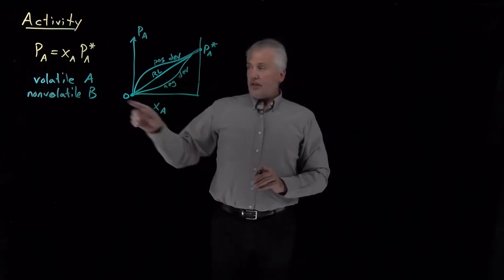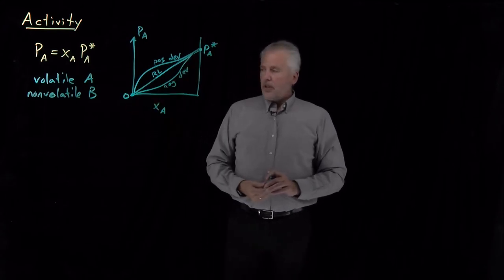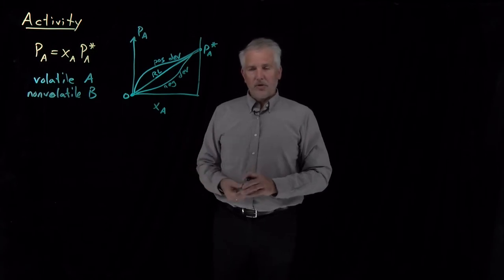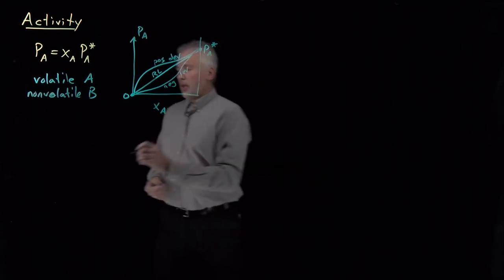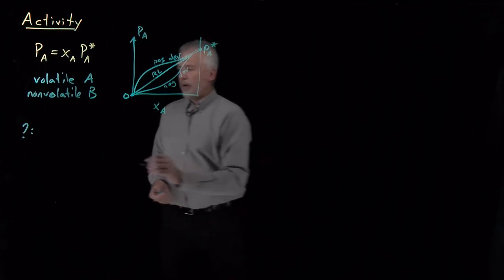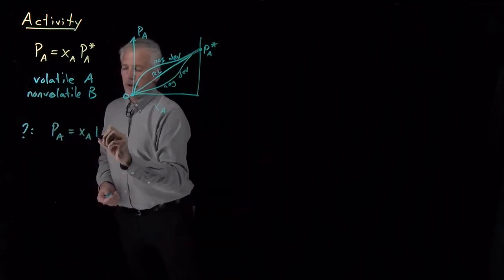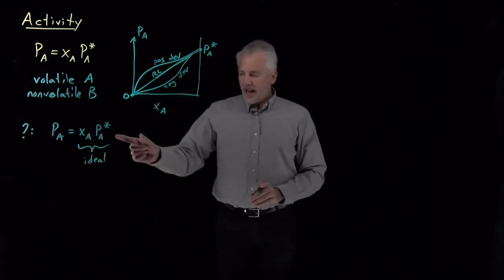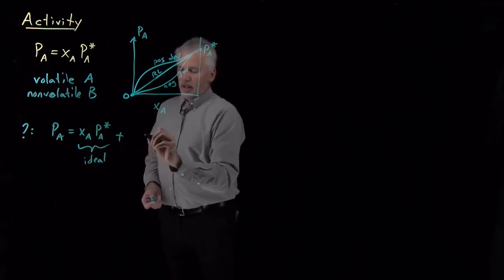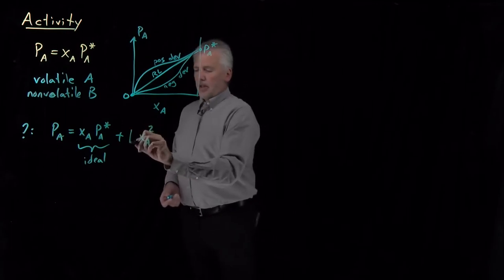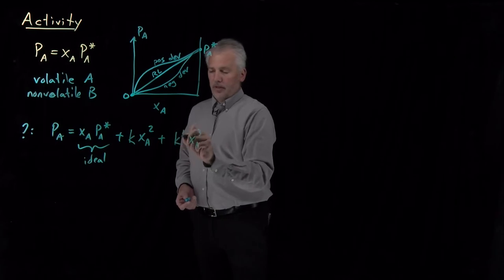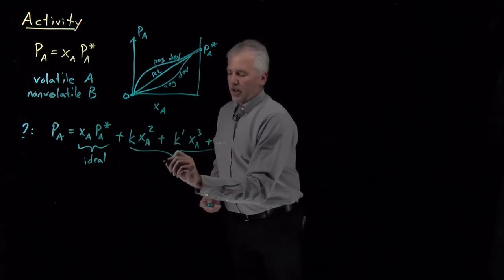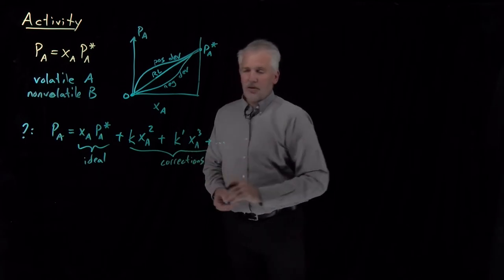To understand these curves quantitatively, instead of just using a straight line for the Raoult's Law curve, we can do what physical chemists usually do: after defining an ideal model, we introduce corrections to describe reality more accurately. We can rewrite the equation by adding correction terms — a linear term first, then a quadratic term with some constant, a cubic term with a different constant, and so on. That's the typical physical chemistry approach: take the ideal behavior and throw on non-ideal corrections.